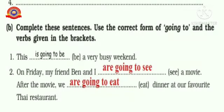Complete these sentences. Use the correct form of 'going to' and the verbs given in the brackets. This is going to be a very busy weekend. On Friday, my friend Ben and I — see a movie. The verb given here is 'see' and the correct form of 'going to' is 'are going to see'. So the sentence becomes: On Friday, my friend Ben and I are going to see a movie.